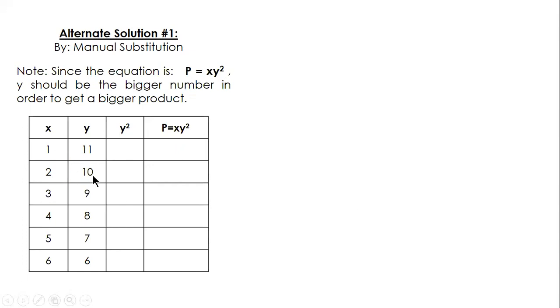Choose two numbers that add up to 12: 1 and 11, 2 and 10, 3 and 9, 4 and 8, 5 and 7, 6 and 6. After this, square y: 11 squared is 121 and so on. Then get the product x times y squared. So by inspection, the maximum product is 256, and x equals 4, y equals 8.